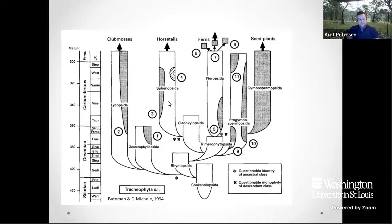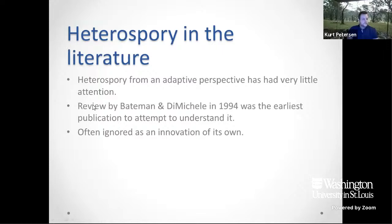If heterospory offers such an advantage, you would have thought that more of those independent origins would still be extant. But it's still interesting that so many independent evolution events occurred, suggesting heterospory offers some advantage strongly enough that this trait keeps re-evolving. From an adaptive perspective, heterospory has had very little attention in the literature. The anatomy and fossil history are well documented, but understanding its adaptive evolutionary history is poorly recorded. Bateman and DiMichele in 1994 did a really good review attempting to define and discuss what's known about heterospory from a more evolutionary perspective, but other than this it's generally ignored as an innovation in itself.